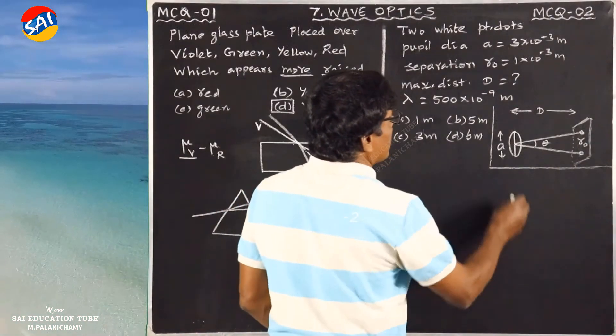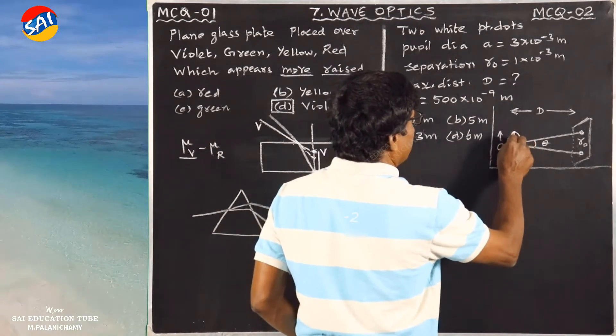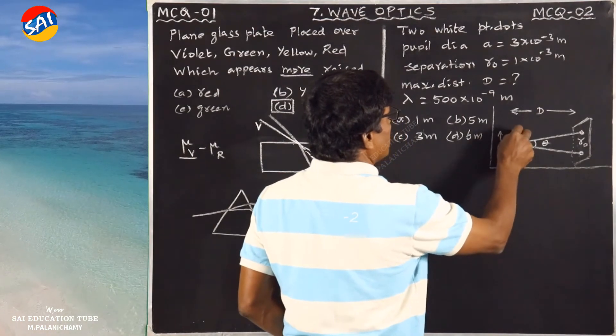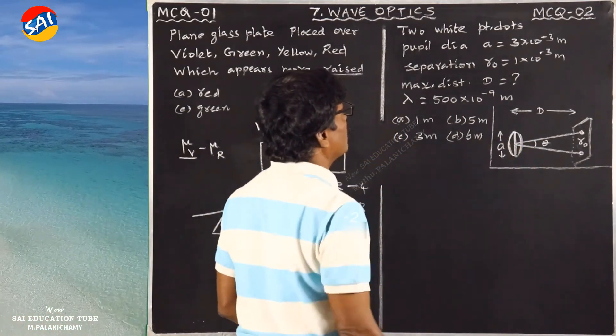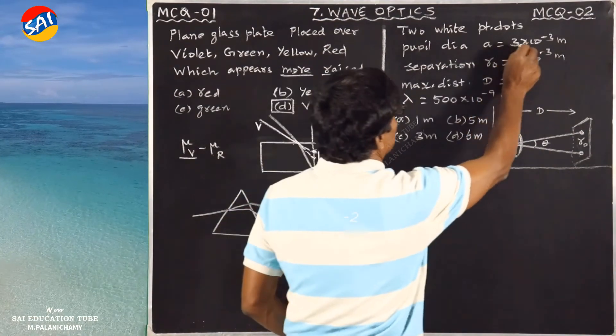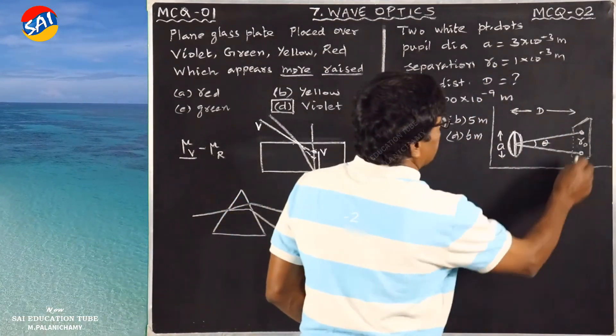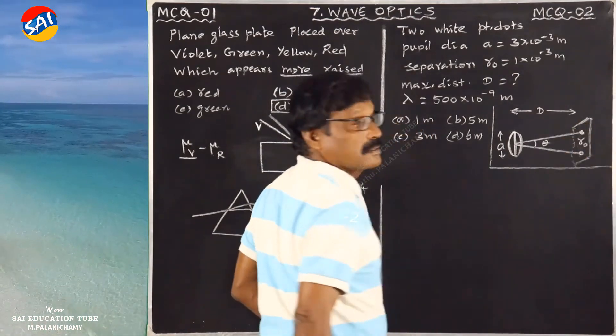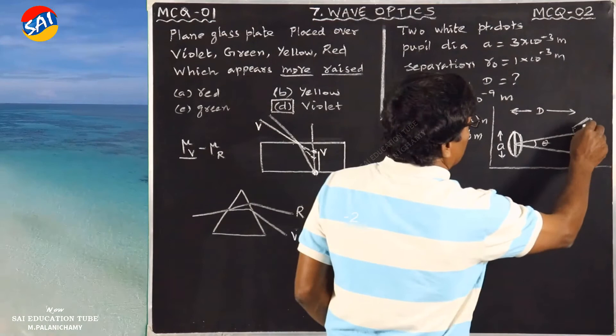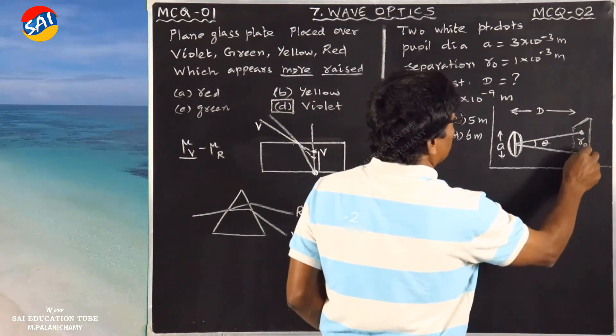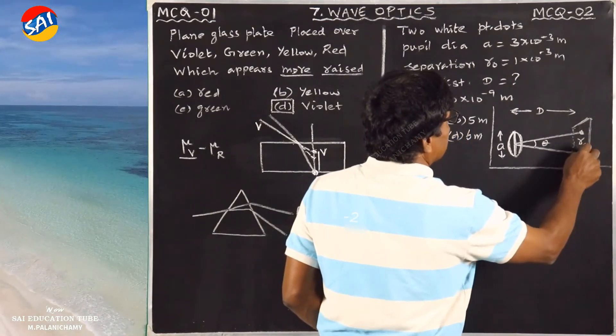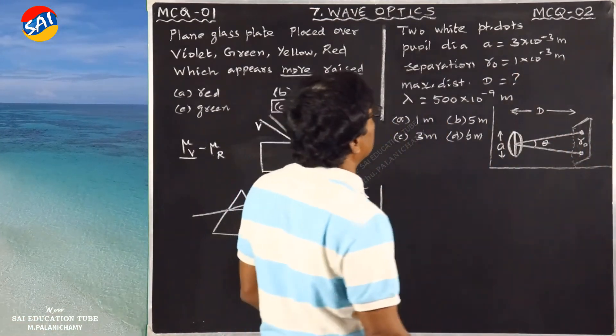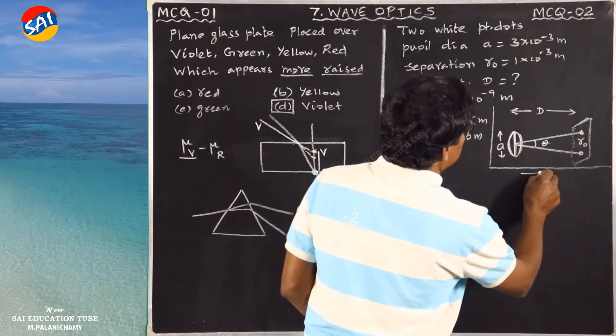For the eye lens, a equals 3 mm. Here we have paper with two dots, and we need to find the distance.